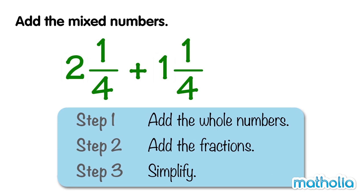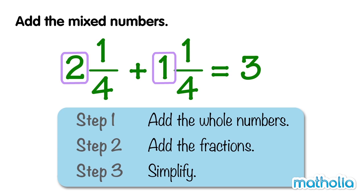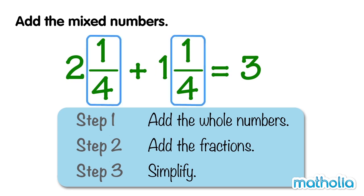Step 1: Add the whole numbers. 2 plus 1 equals 3. Step 2: Add the fractions. These fractions are like fractions, so we can add the numerators and keep the denominator the same. 1 quarter plus 1 quarter equals 2 quarters.